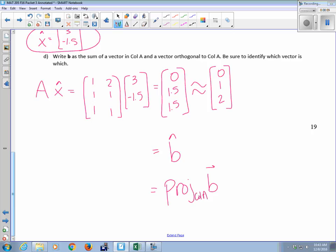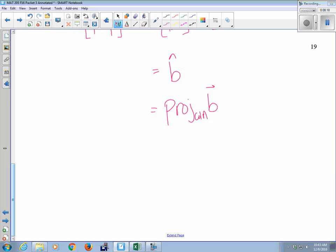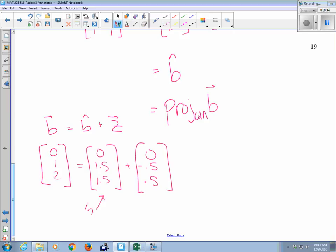So if I want to write B as the sum of a vector in col A and a vector orthogonal to col A, well, that's B hat and Z. Same thing we've been doing in the past few classes. So I could say B, which is 0, 1, 2. Write out what I'm doing here. B hat plus Z. So B hat is 0, 1.5, 1.5, which means that Z has to be 0, negative 0.5, and 0.5. So this is the one in col A. And this one is in col A.